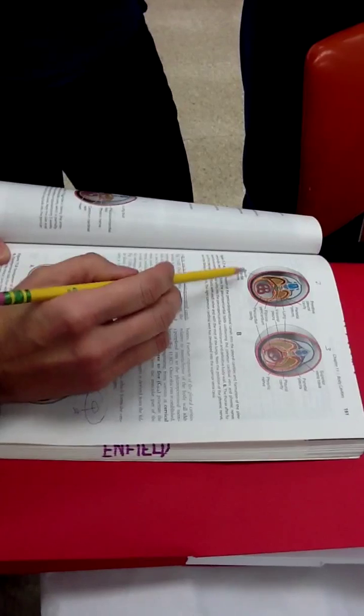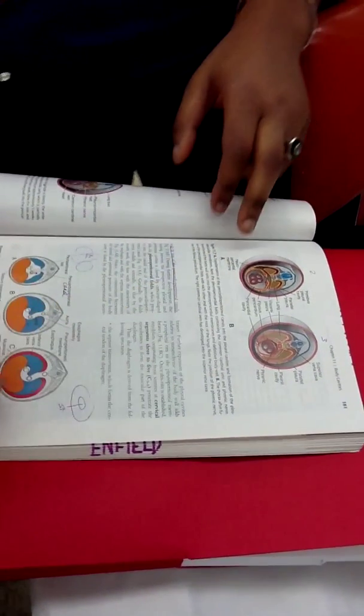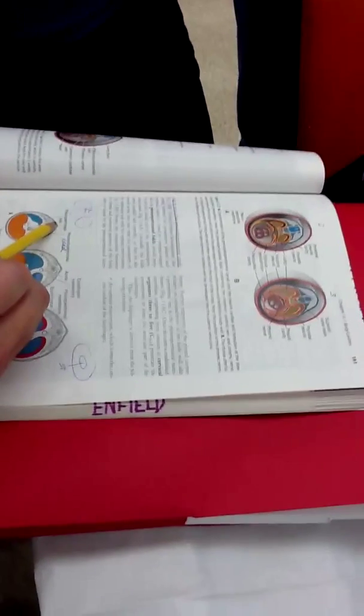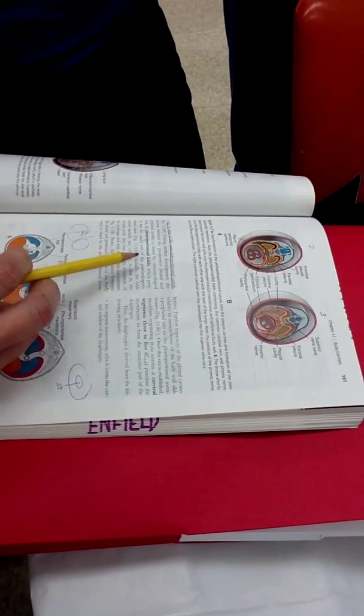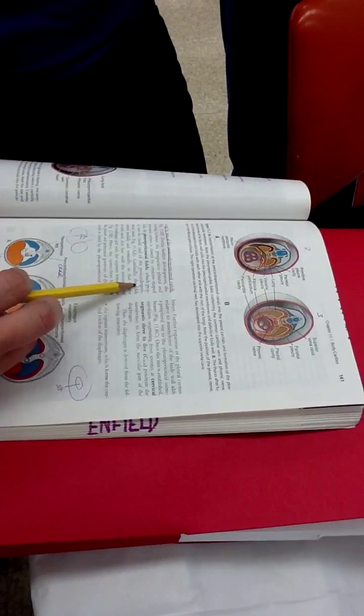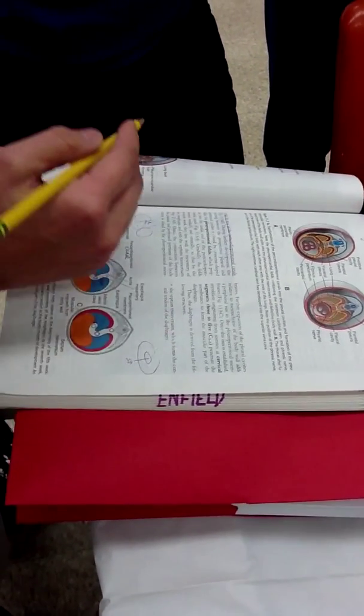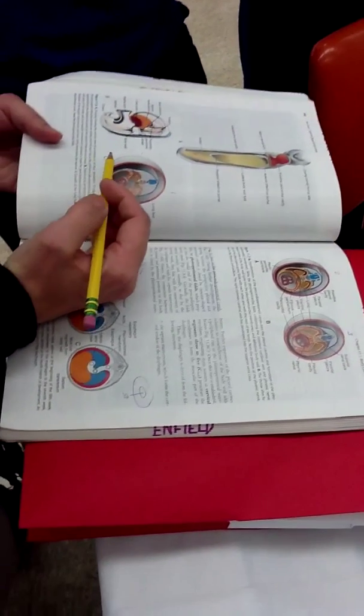So your question was, so does that answer that question? Yeah, so that's one fold. So the other fold is the pleural peritoneal fold. Right. And that's coming off, it's projecting from the pericardial peritoneal canal. Right, so the canals are different. What are they important for?